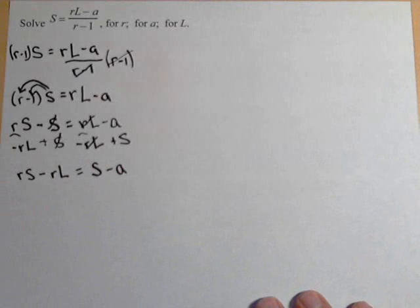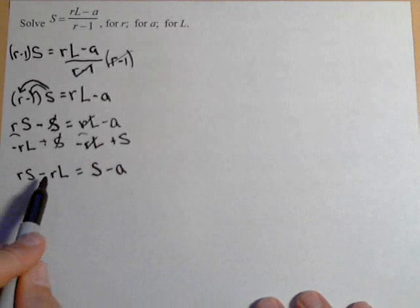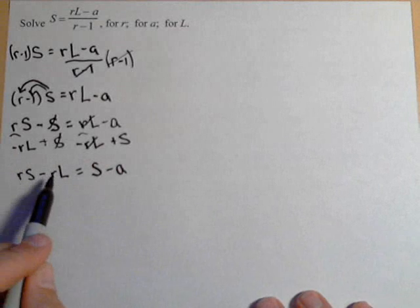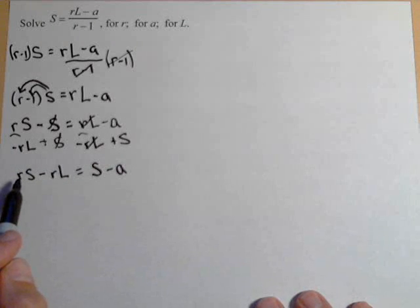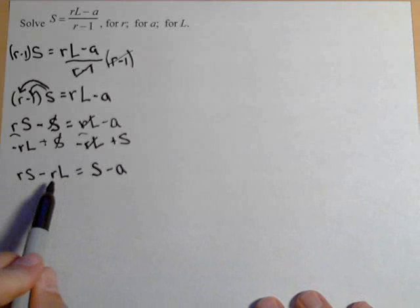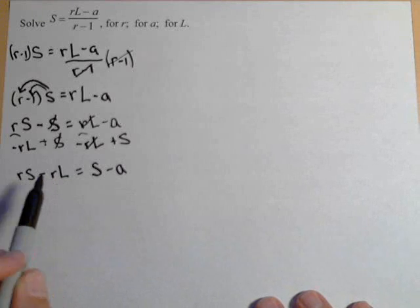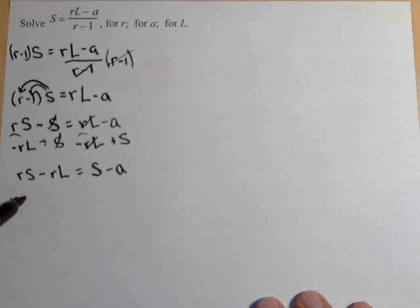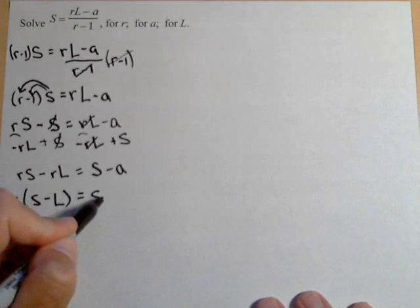Now, the reason we had to do that is because we're still trying to solve for R, and we still have two of them. But because they're on the same side and R is in each term, we can factor an R out. So we get R times S minus L. This might be easier to see going the other direction. To go from here to here, we would distribute the R, and that's where we get RS minus RL.